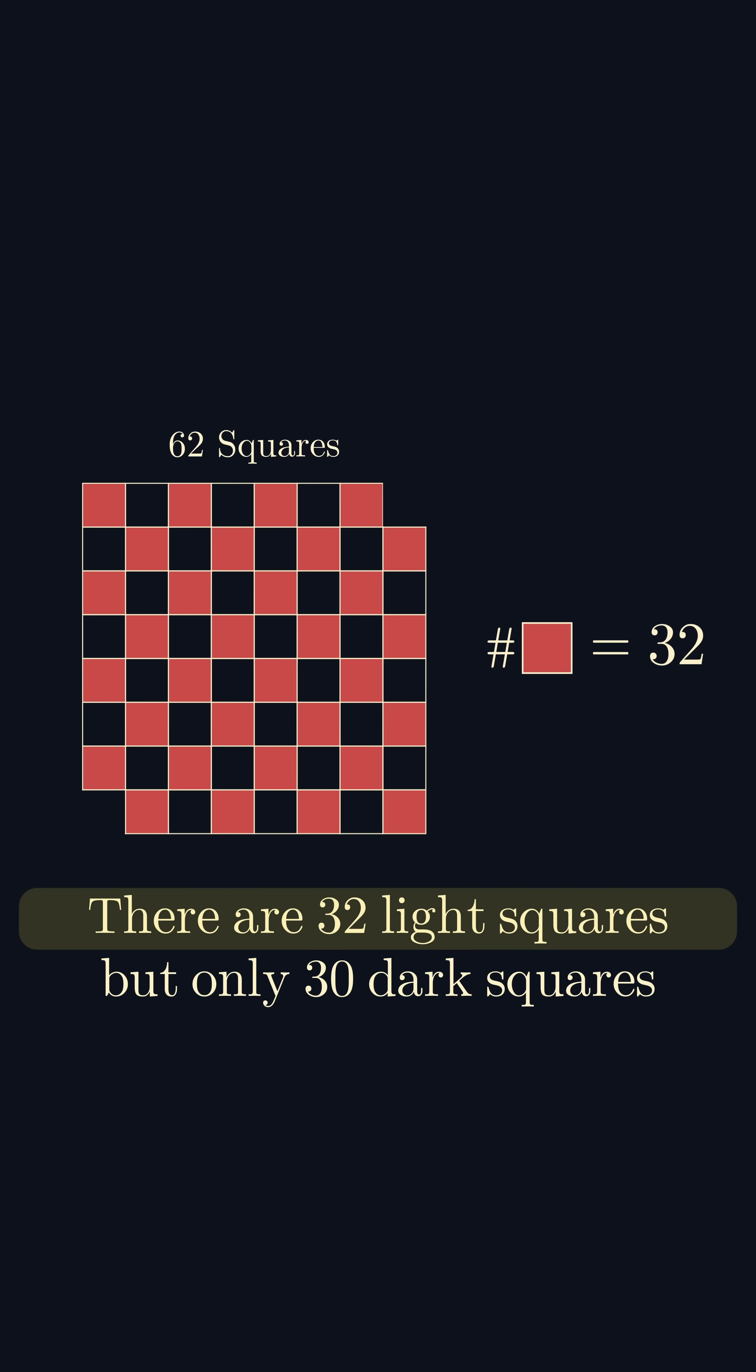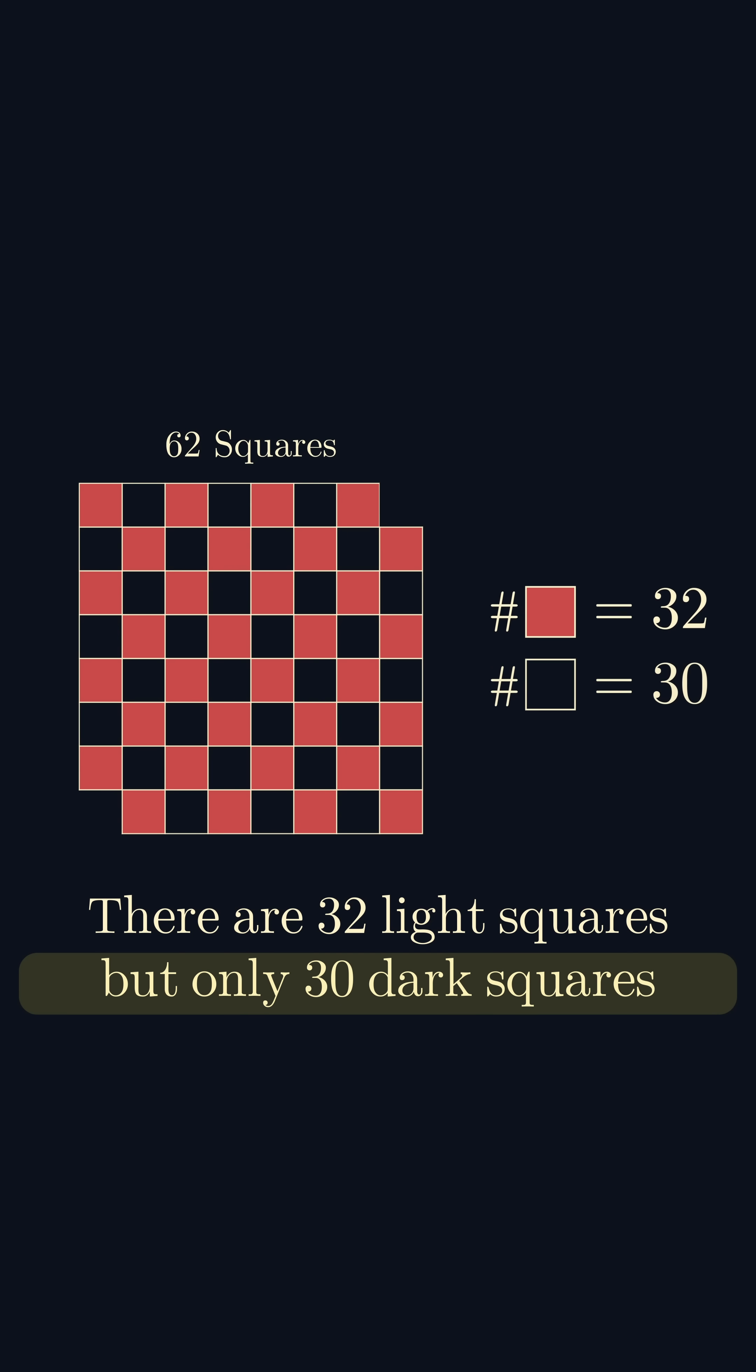There are 32 light squares, but only 30 dark squares remaining after removing the corners.